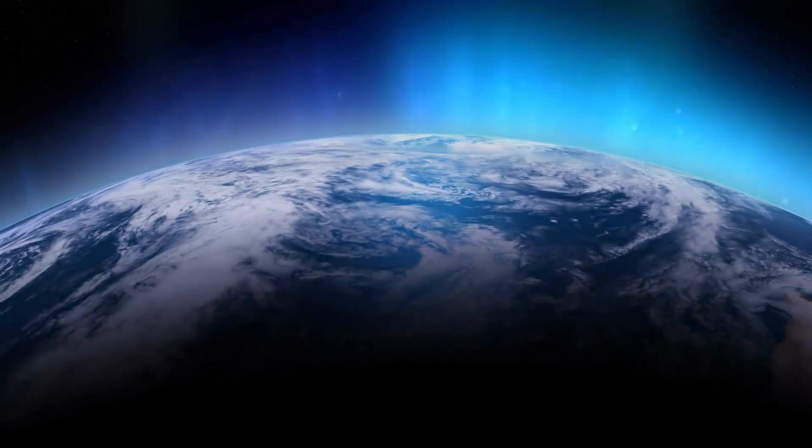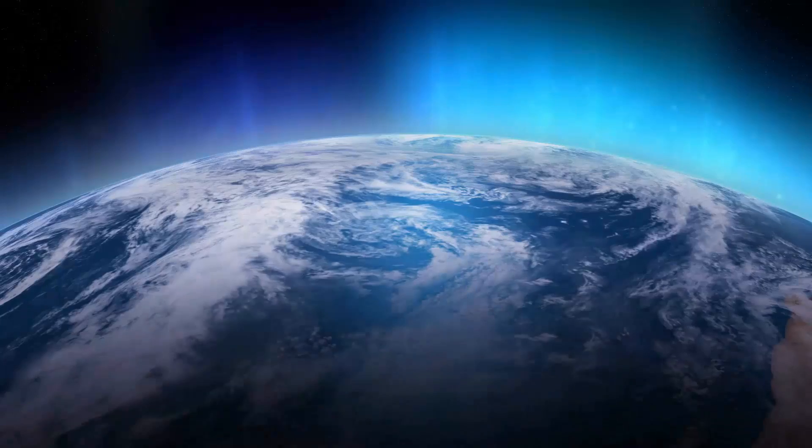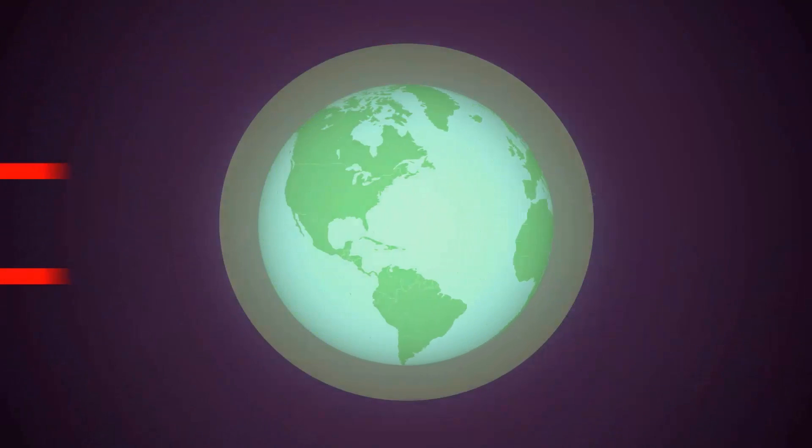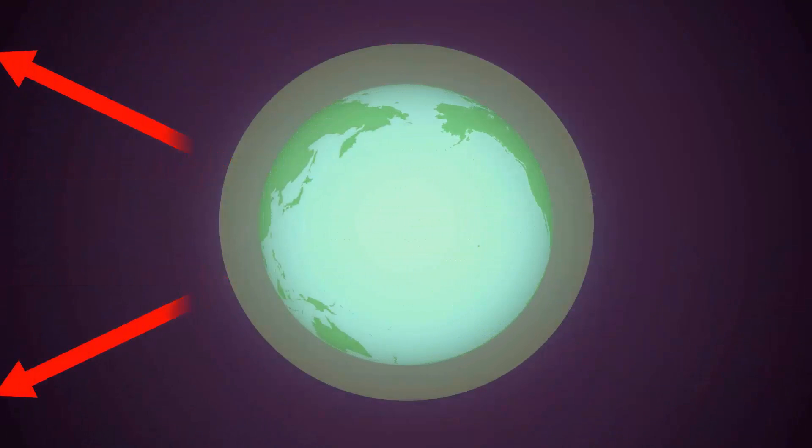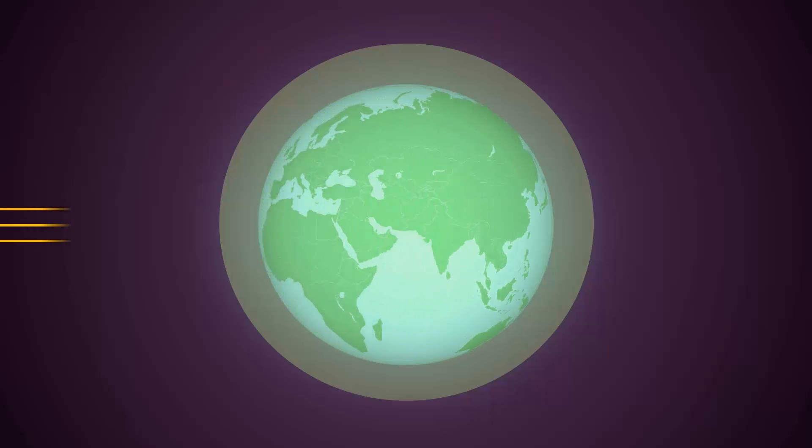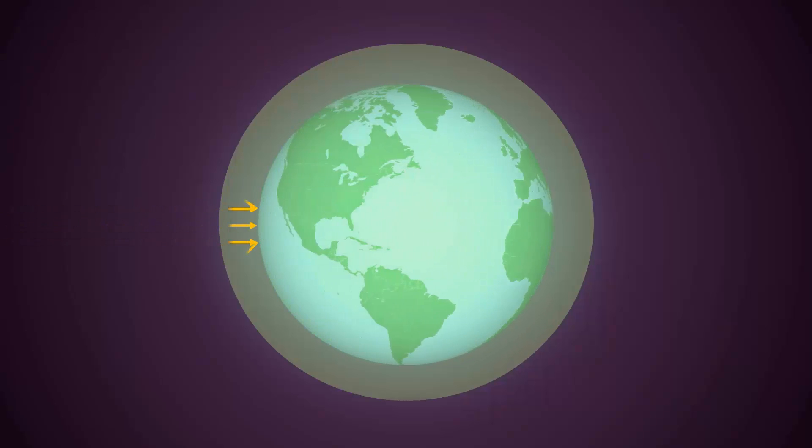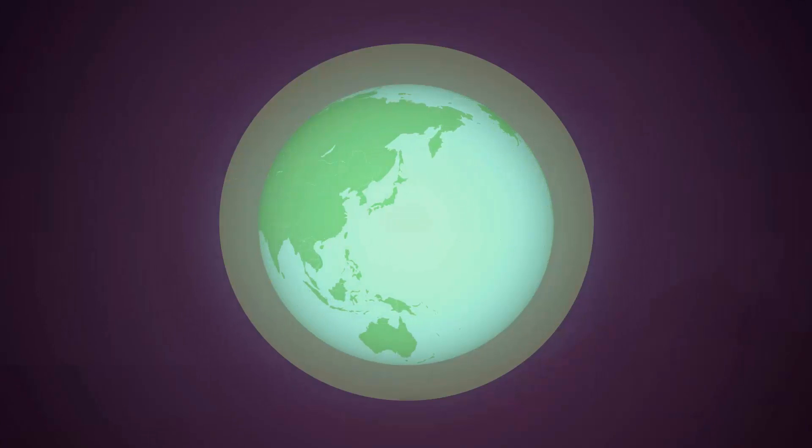The Earth's atmosphere is what makes life on Earth possible. This atmosphere protects us from harmful radiations of the sun and helps maintain the Earth's temperature by trapping some of the heat that enters the atmosphere.